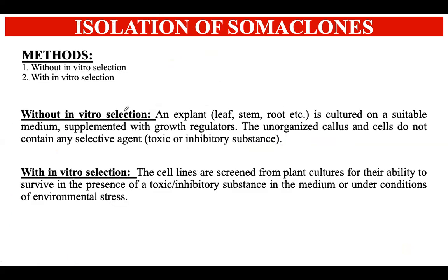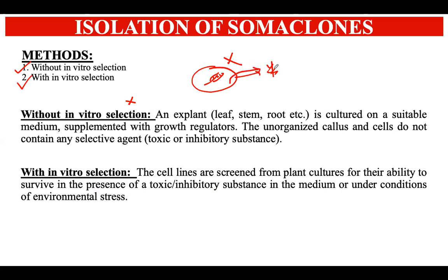Now let's understand the different methods of somaclonal isolation — how to identify cells or plants with genetic variability and desirable traits. There are two methods: without in vitro selection and with in vitro selection. In without in vitro selection, no selection occurs during the in vitro process. You grow the explant on artificial medium like a normal tissue culture, and you are not selecting any trait or observing genetic variability in vitro. Instead, when the fully grown plant is transferred to the field, you screen the plants for desirable traits.